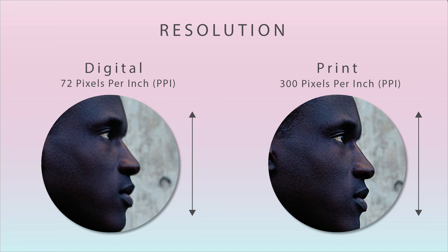However, for print-based documents we need a much higher resolution — around 300 pixels per inch. If you start dropping too far below 300 pixels per inch you might end up with blurry images when you print them. While they may look sharp on screen, it's not until you print them that you'll find this out.